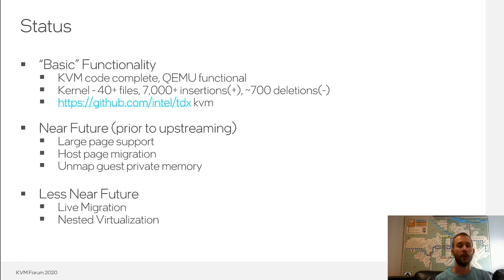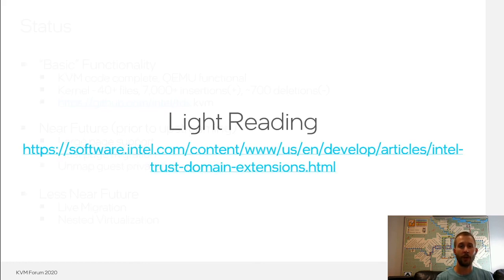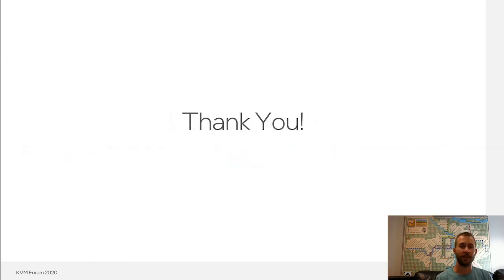In the near future, effectively prior to upstreaming, our to-do list includes large-page support especially 2 MB pages, host page migration, and the unmapping of guest private memory. Longer term, our top priority is live migration, and we also have line of sight to nested virtualization — nesting legacy VMs inside trust domains. We are not planning on supporting trust domains nested within other trust domains. Last but not least, if you want a bit of light reading, the specs for TDX are available on Intel's website. Thank you, and hope you have a great virtual KVM Forum in 2020.